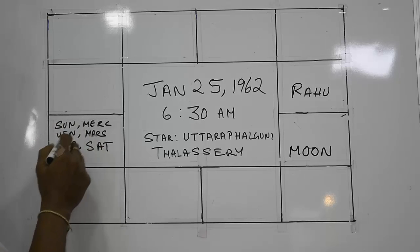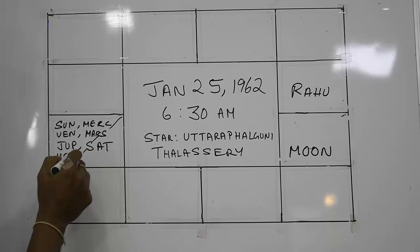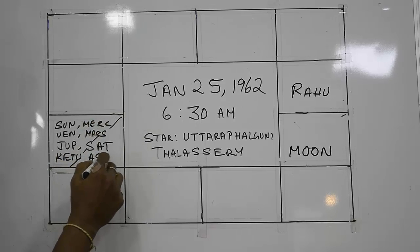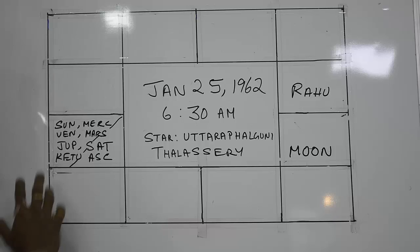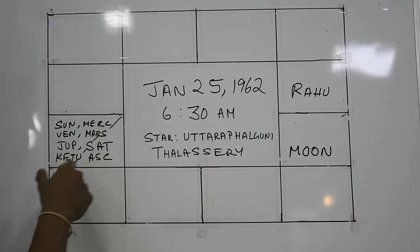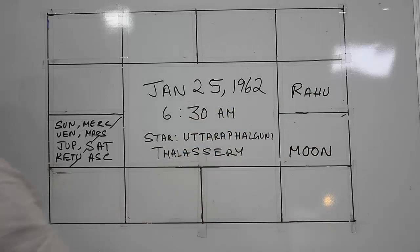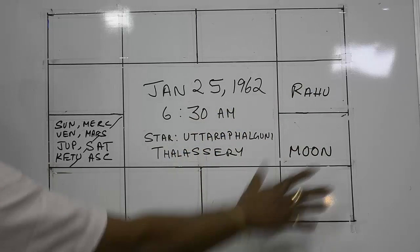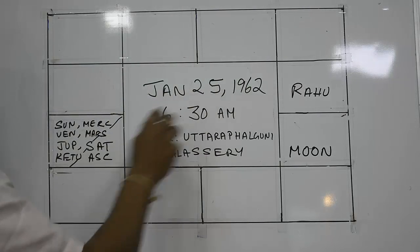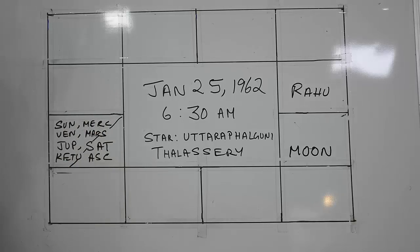Counting the grahas: 1, 2, 3, 4, 5, 6, 7 — you have 7 grahas, and this is the ascendant, so the ascendant is also here. This is a peculiar horoscope — 7 planets in Lagna. You have Rahu in the 7th and Moon in the 8th. Everything is clean on that particular day. On the 5th, even the Moon had come here and all 8 grahas were together.